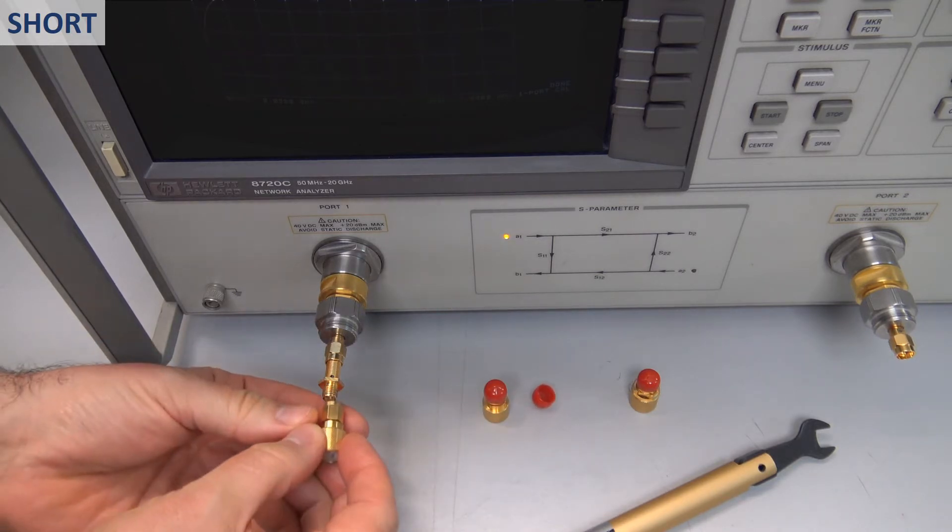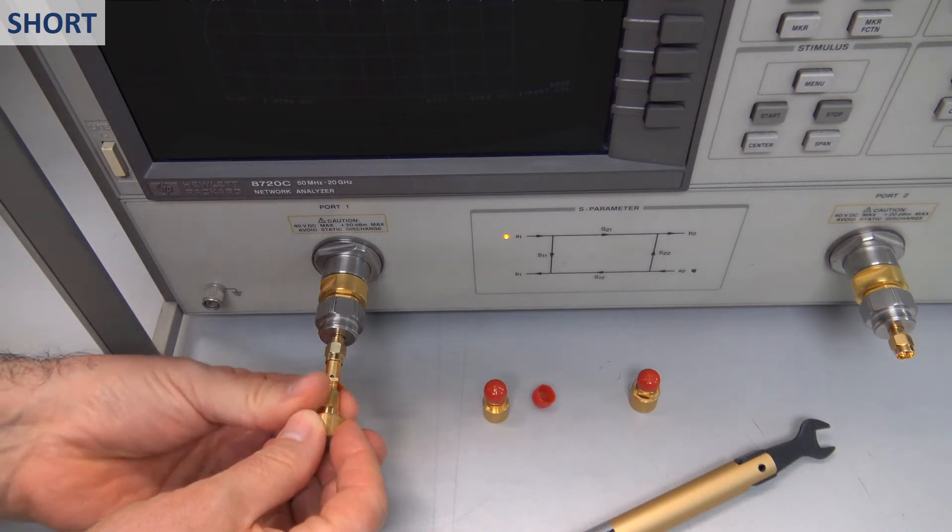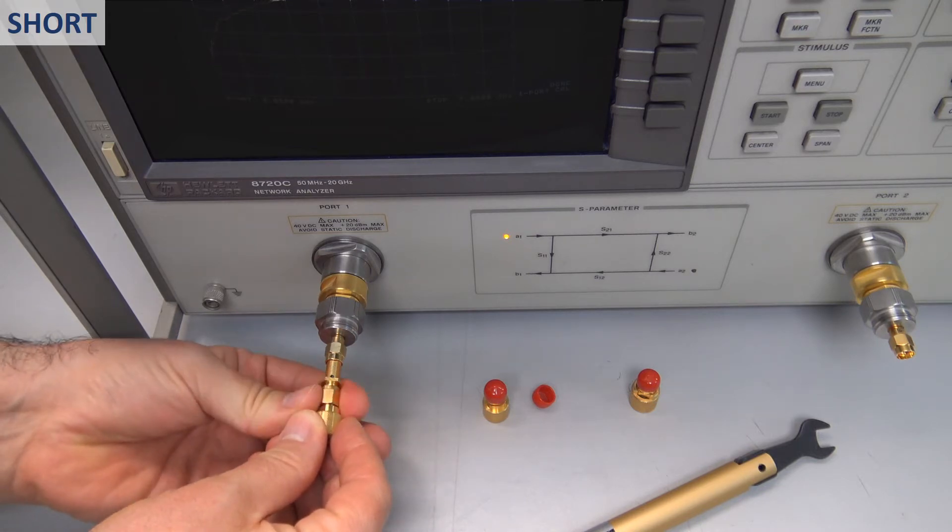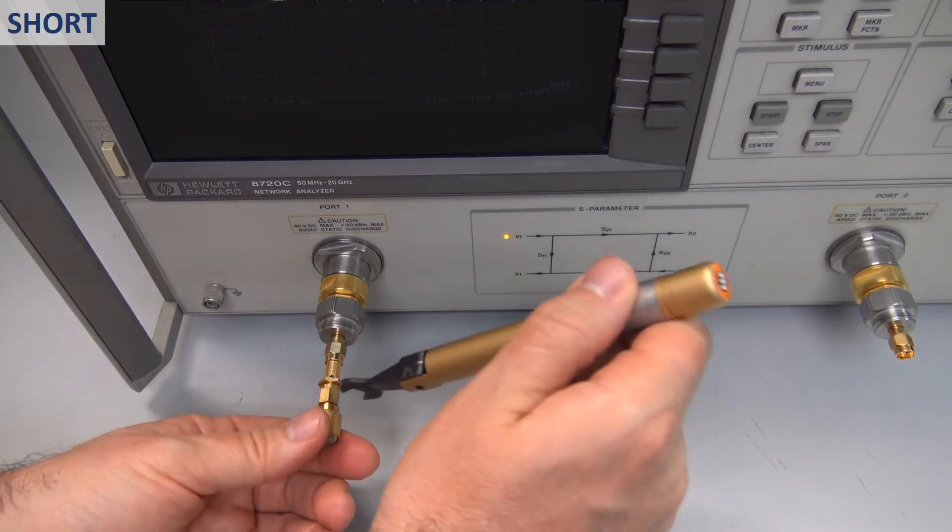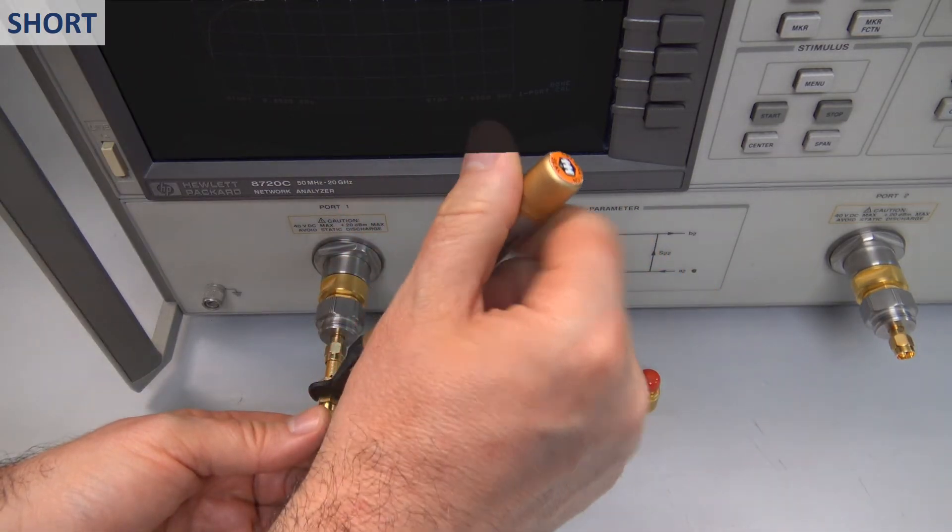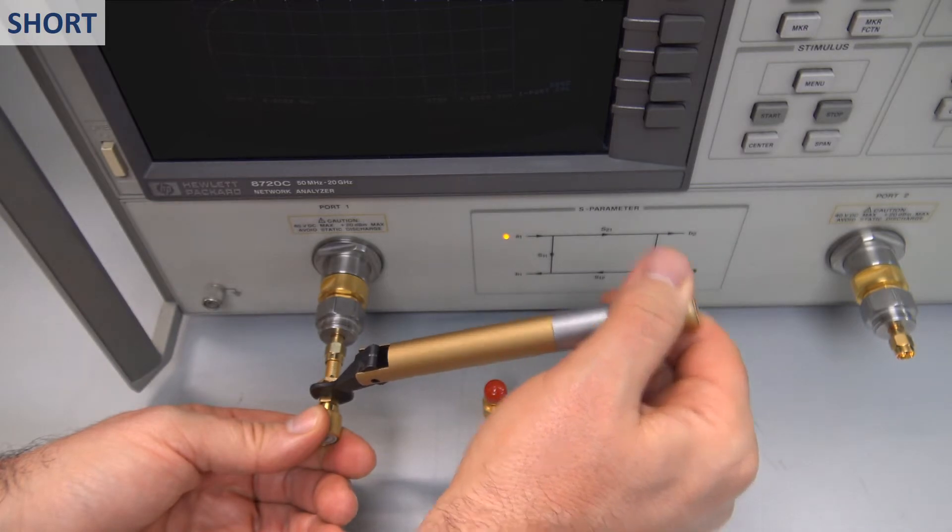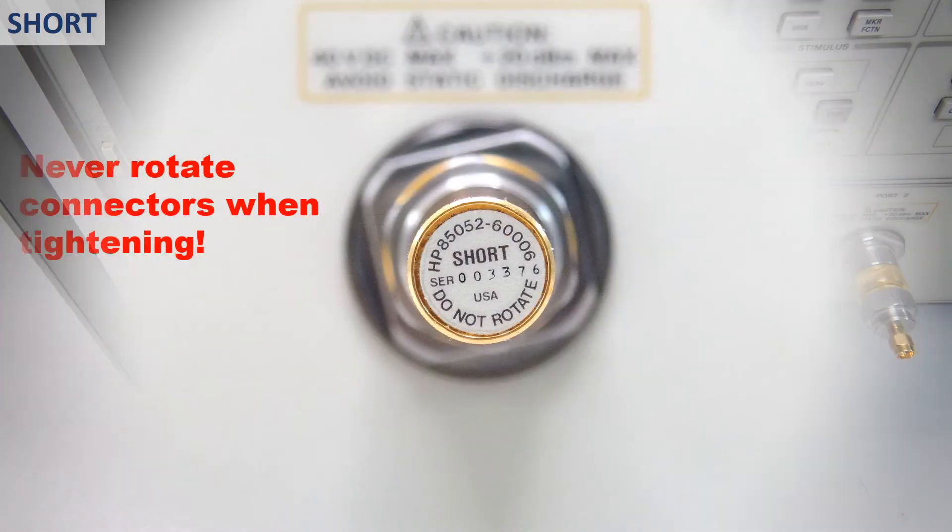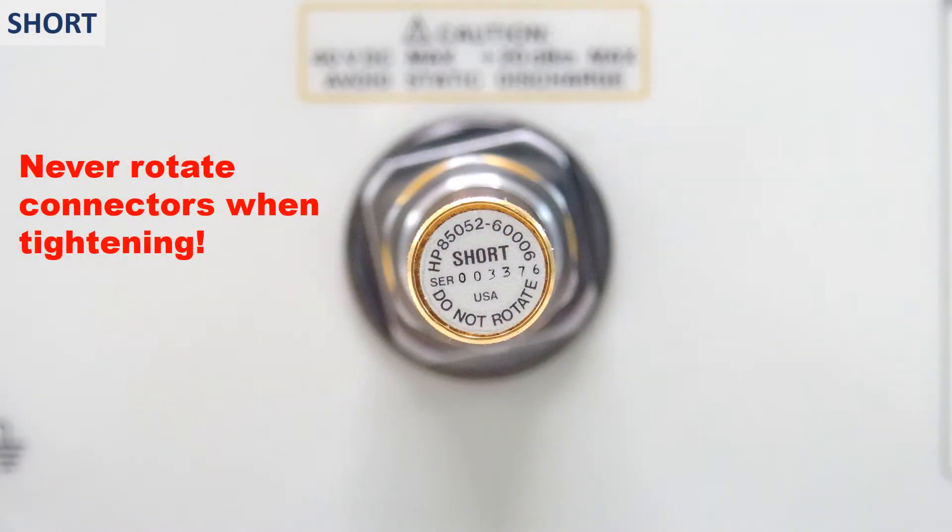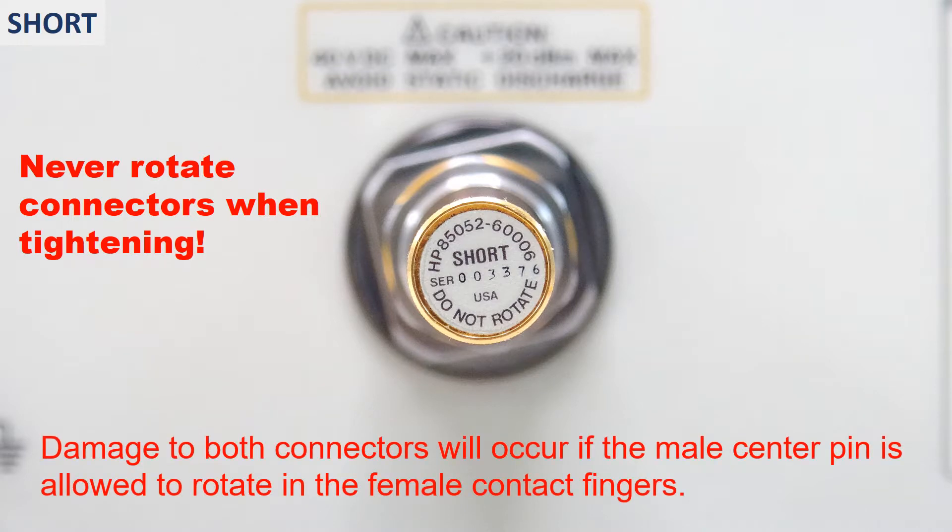Mechanical calibration kits used to come with a calibrated torque wrench. Let us see how to use it. Proper torque on the connector improves measurement repeatability. We hold the torque wrench lightly at the end of the handle and tighten until the break point of the torque wrench is reached. It is particularly important that you rotate only the connector nut, NOT the device or connector body. The connectors might be damaged if the male center pin is allowed to rotate in the female contact fingers.